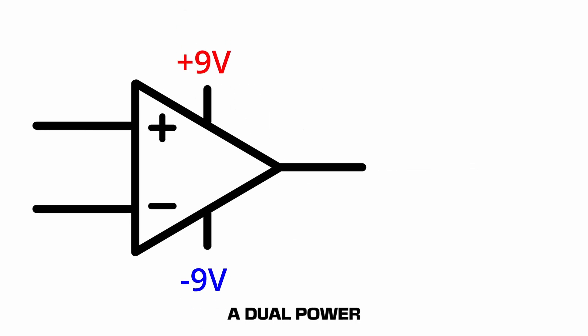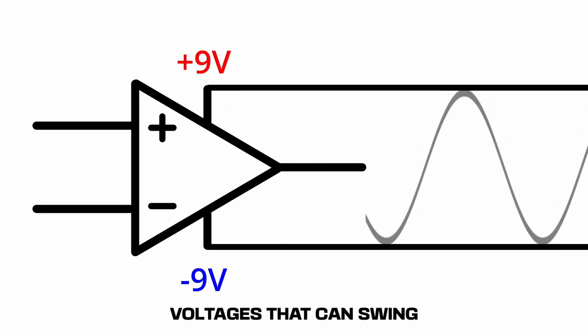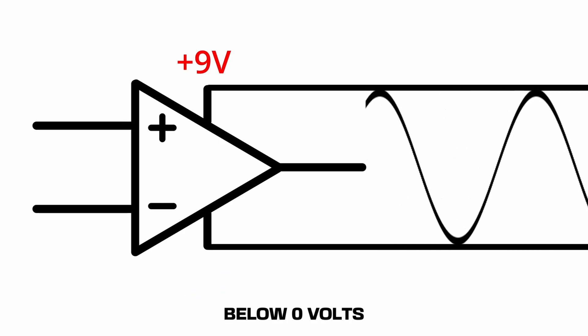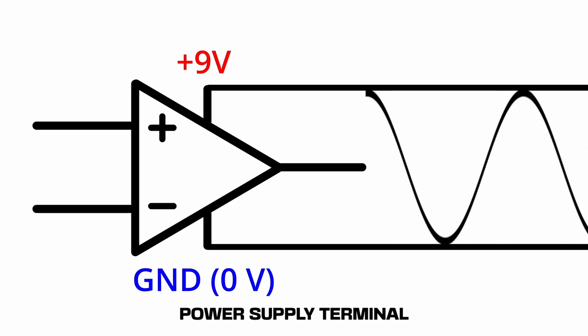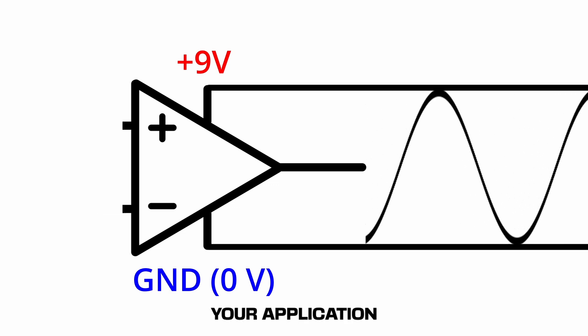We can use a dual power supply which allows us to produce output voltages that can swing above and below zero volts. We can also use a single power supply and ground our negative power supply terminal. It all depends on your application.